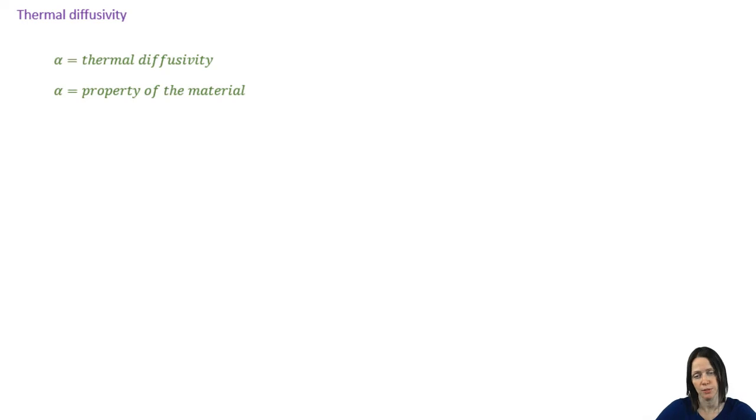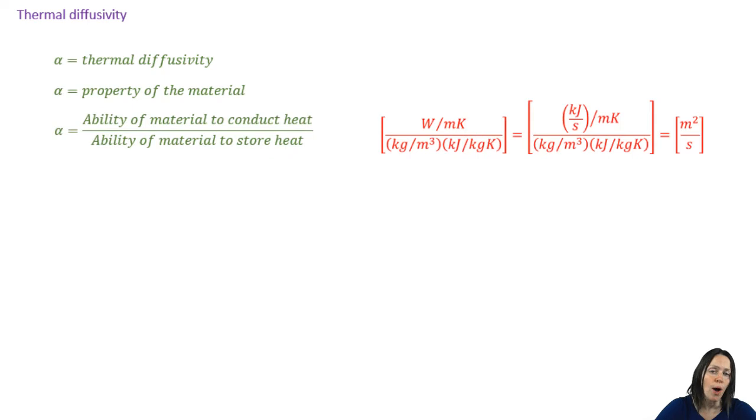Now let's talk about thermal diffusivity. For this, we're going to use the Greek letter alpha. It's the ratio of the ability of a material to conduct heat versus the ability to store heat. The idea of a material's ability to store heat might cause you to think that you would see a heat capacity term somewhere in here, and you would be right. So looking at that ratio, we can see that if the material has a high thermal diffusivity, it'll conduct heat very well, but store it poorly. In other words, those materials respond quickly to changes in the environment.